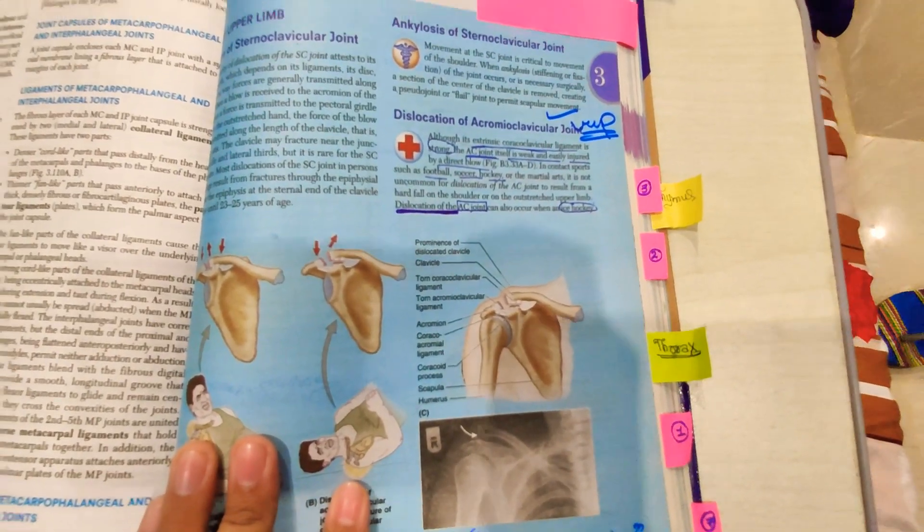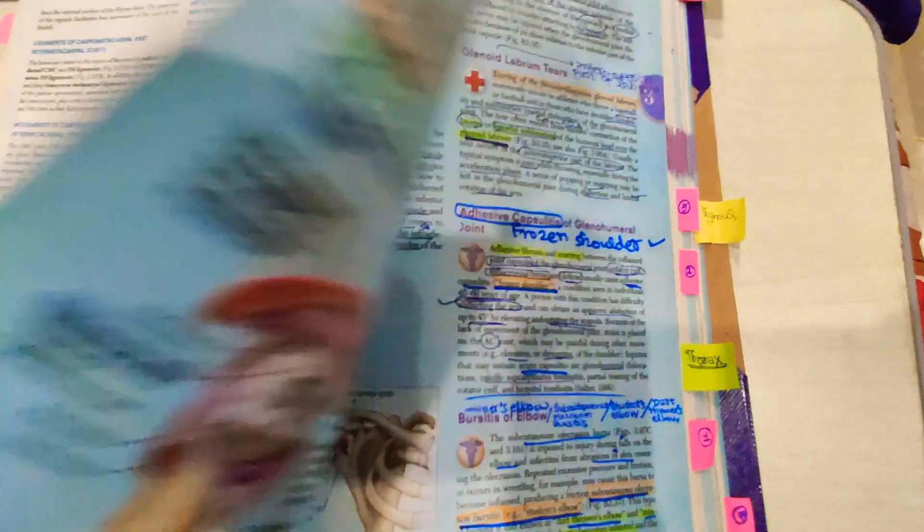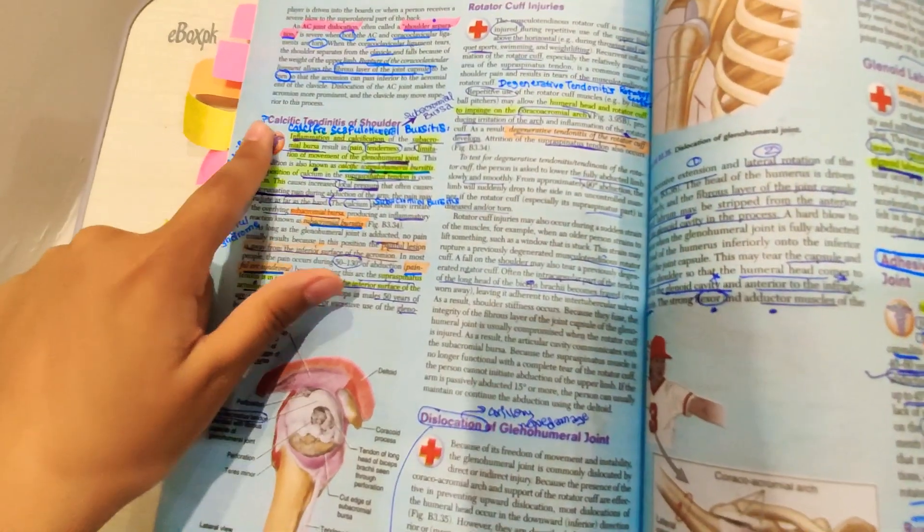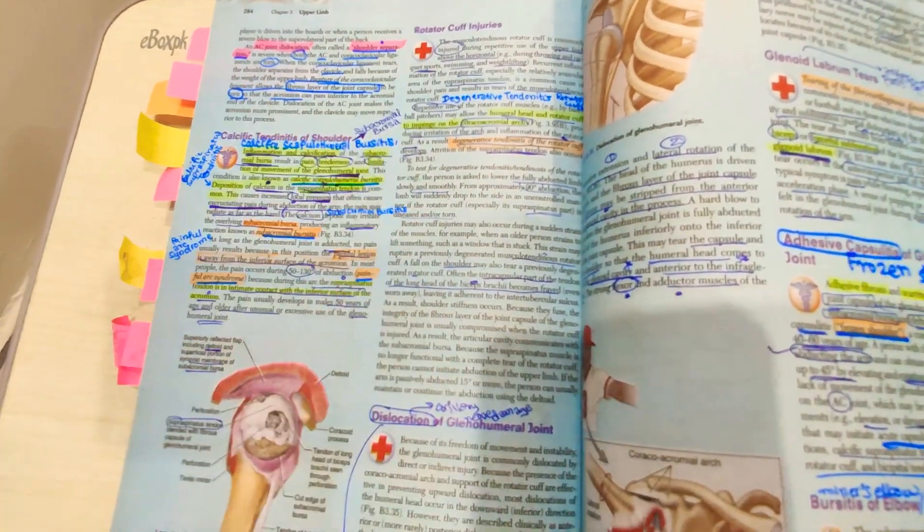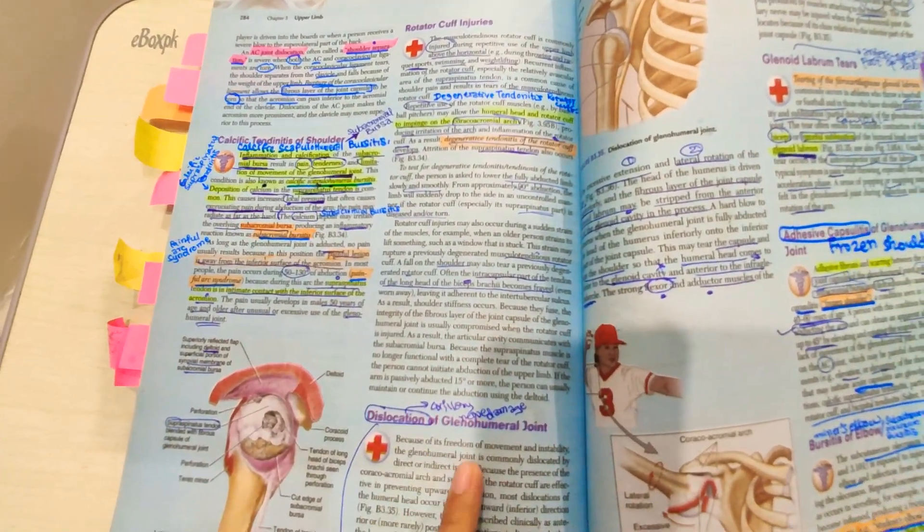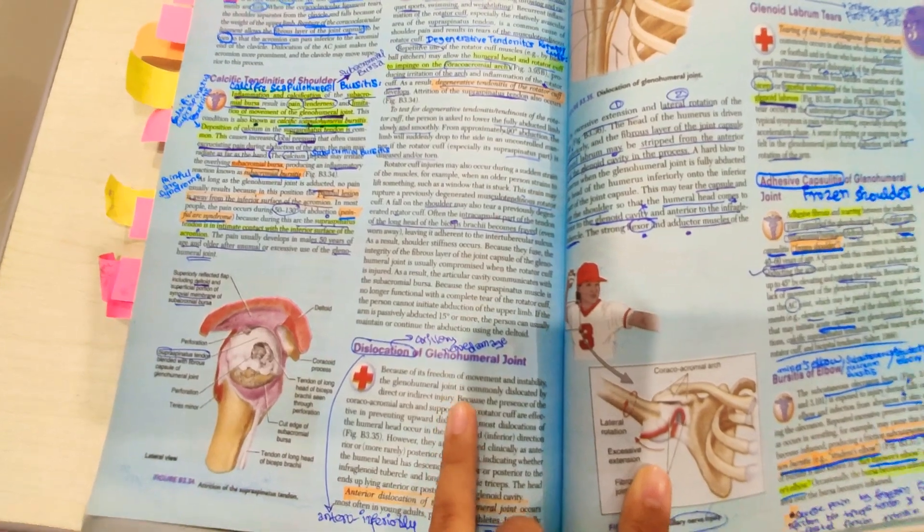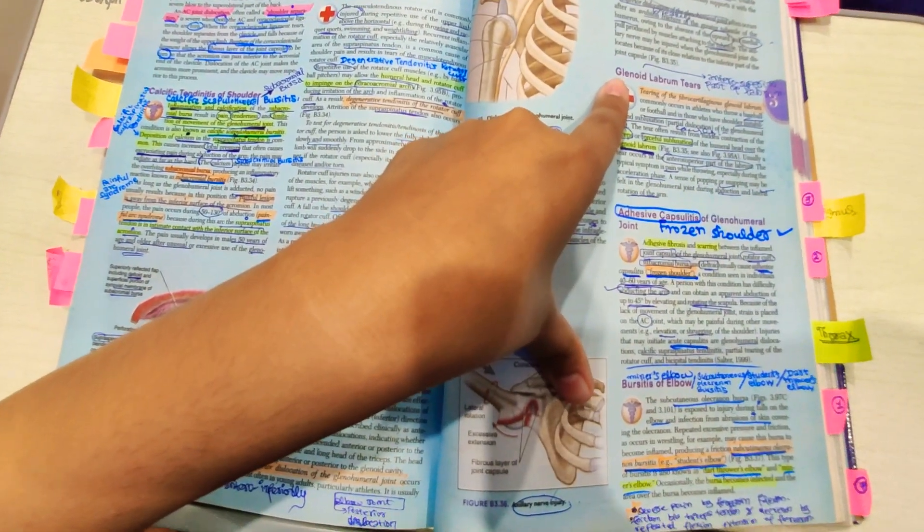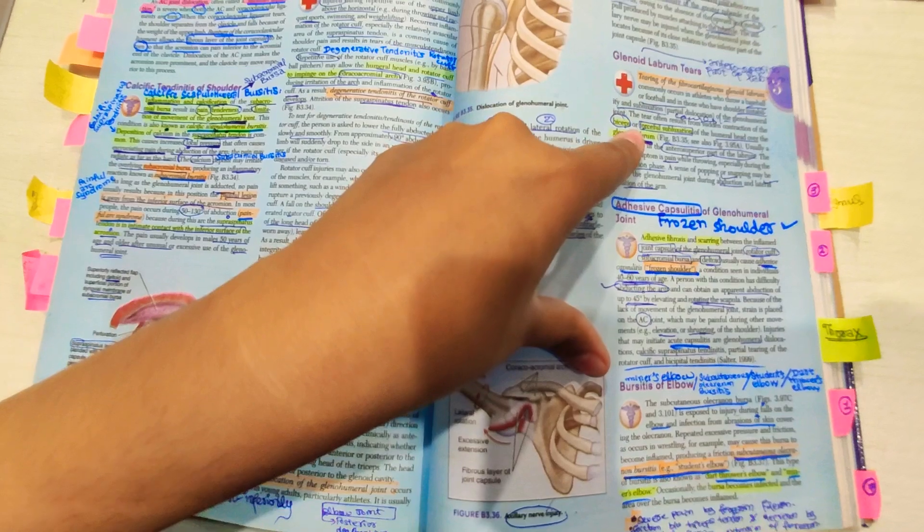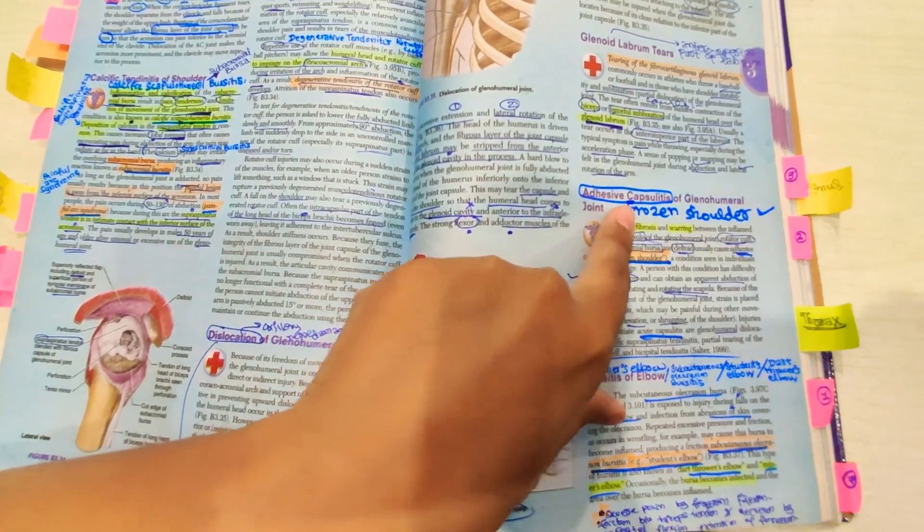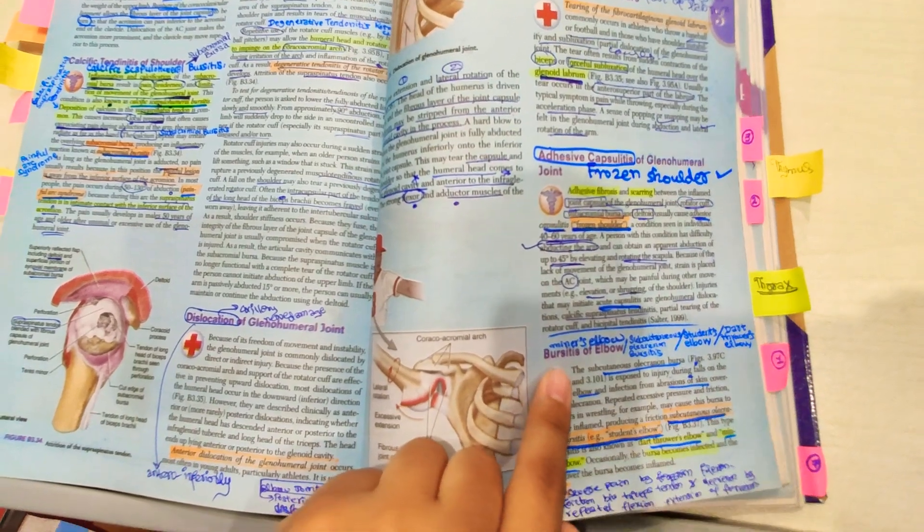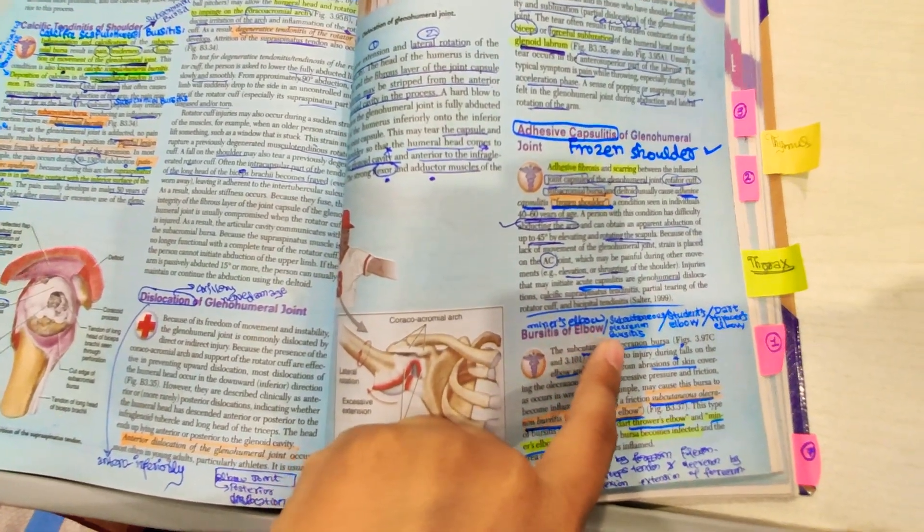Then come to clinicals of joints: dislocation of acromioclavicular joint and calcific tendinitis of shoulder and rotator cuff injuries. Dislocation of glenohumeral joint, just give it a read, and glenoid labrum tears, just give it a read. And then adhesive capsulitis, frozen shoulder, bursitis of elbow, subcutaneous olecranon bursitis.